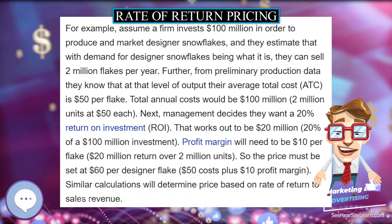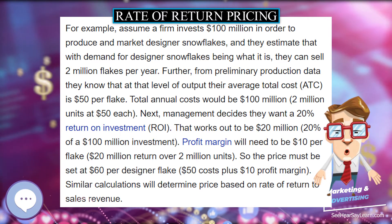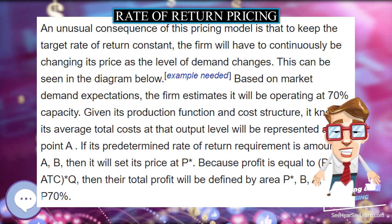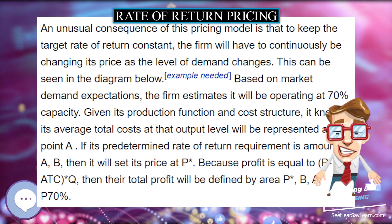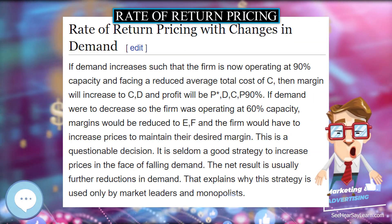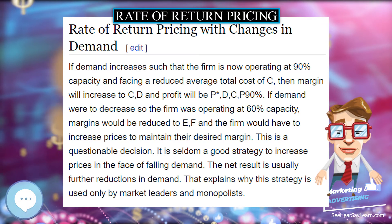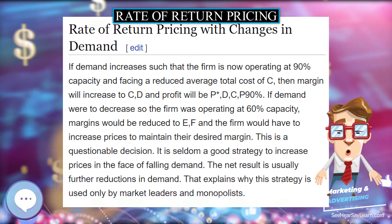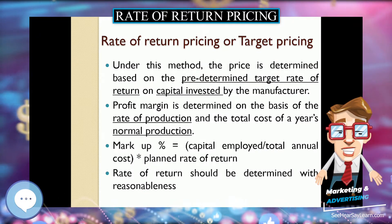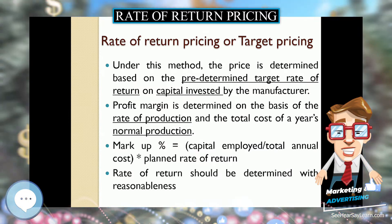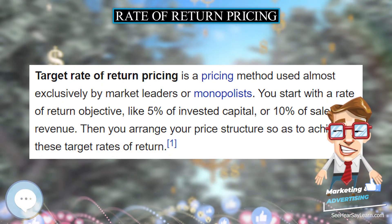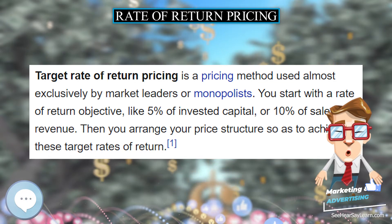Management decides they want a 20 percent return on investment (ROI), which works out to be 20 million dollars — 20 percent of a 100 million dollar investment. The profit margin will need to be 10 dollars per flake — 20 million dollars return over 2 million units — so the price must be set at 60 dollars per designer flake: 50 dollars in costs plus a 10 dollar profit margin.